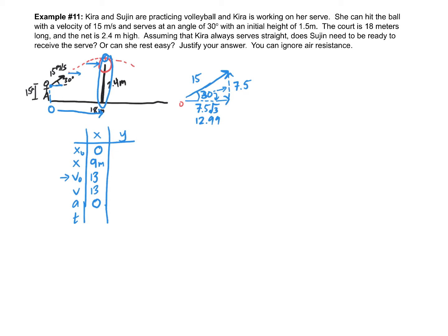Using the kinematic equation x = x₀ + v₀t + ½at², and since acceleration is zero horizontally, it simplifies to 9 = 13t. Solving gives t = 0.692 seconds — that's how long the ball takes to reach the net horizontally.